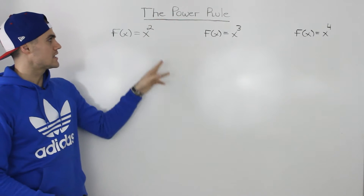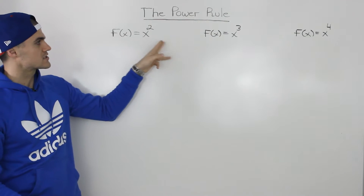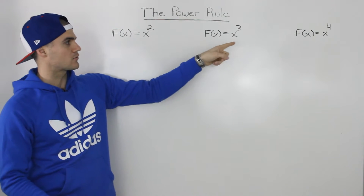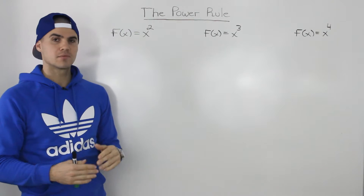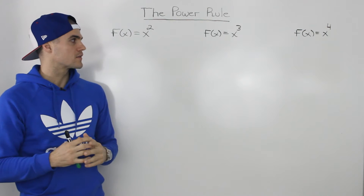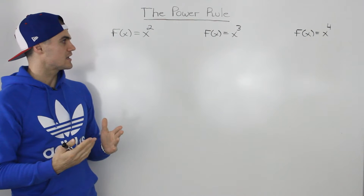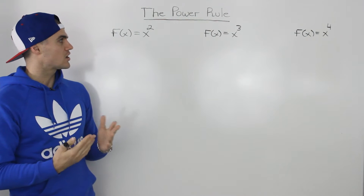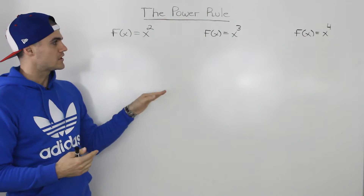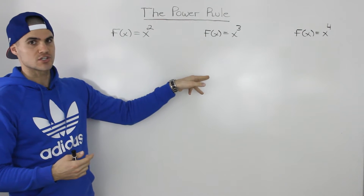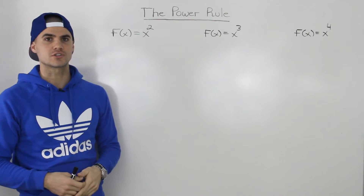To illustrate this rule a little bit better, I'm going to take all three of these functions — x squared, x to the power 3, x to the power 4 — and state what their derivatives are. Then we're going to try to see if there is a common pattern between the derivative of each of these functions and the original function.